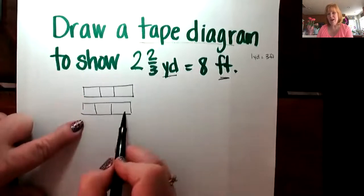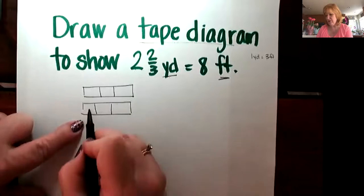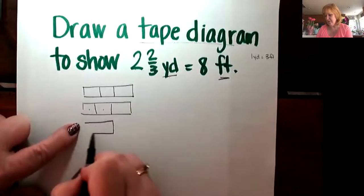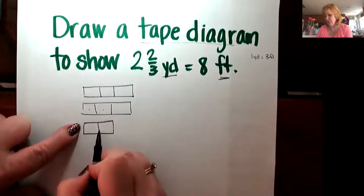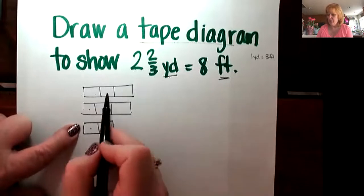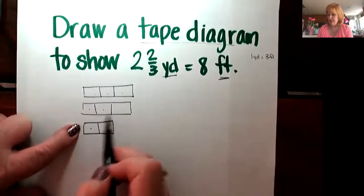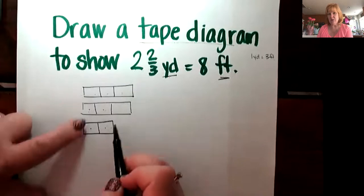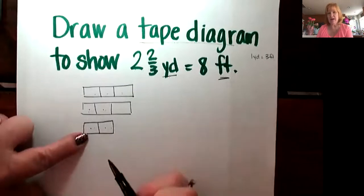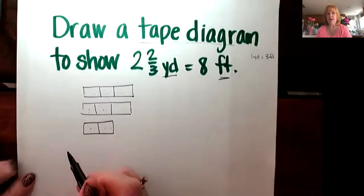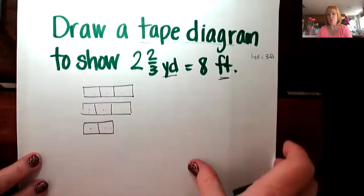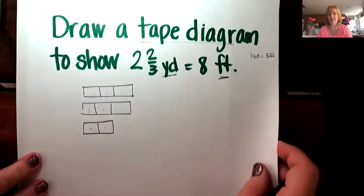Well, I don't have to draw a whole other yard. I just have to draw two of those because I'm drawing two-thirds — one-third and two-thirds. So counting all the sections: one, two, three, four, five, six, seven, eight. Two times three plus two more is equivalent to eight feet. That's what a tape diagram of two and two-thirds yards would be to show eight feet.